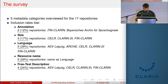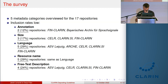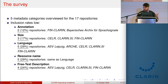For this survey we checked the depositing guidelines of the 17 B centers to see whether they provide specific instruction for the documentation of five metadata categories: annotation, resource size, language, language resource name, and the free text description. We were very liberal with the survey — what counted as being included in the guidelines was basically any kind of instruction for the category in question, even very simple prompts like 'provide information on annotation.' Despite this lenient criterion, the inclusion rates are still very low.